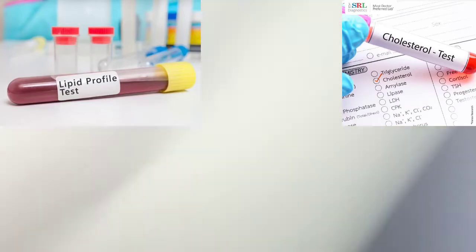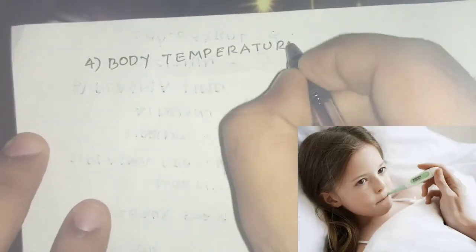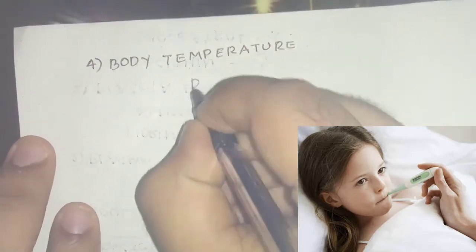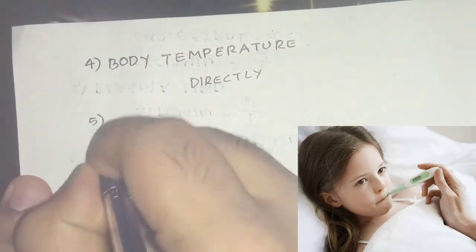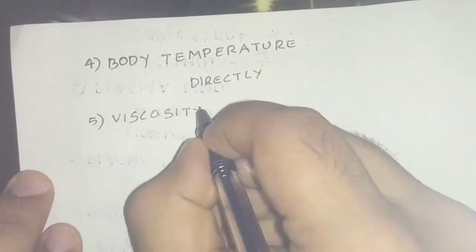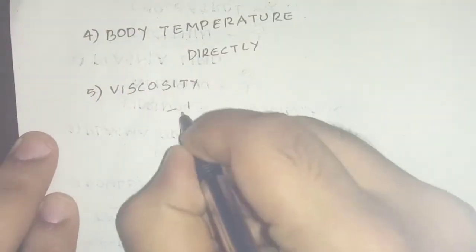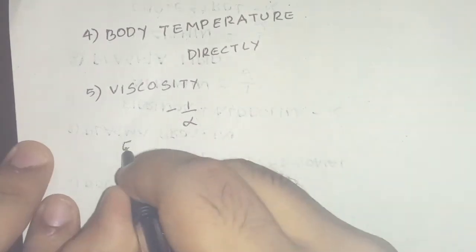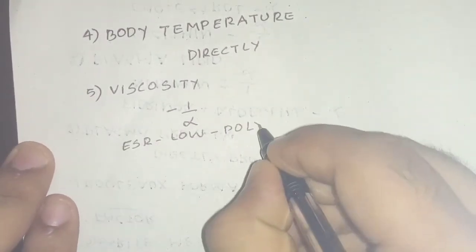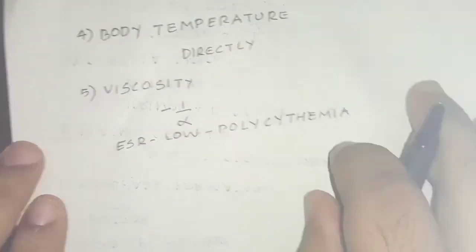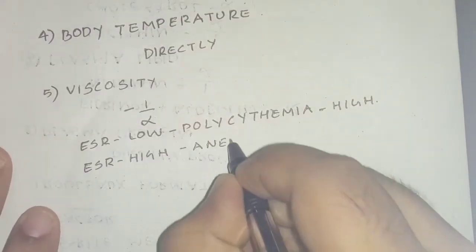For plasma lipids: an increase in lecithin decreases the ESR, whereas an increase in cholesterol increases the ESR. Body temperature is directly proportional to ESR. Regarding viscosity: an increase in viscosity decreases the ESR.